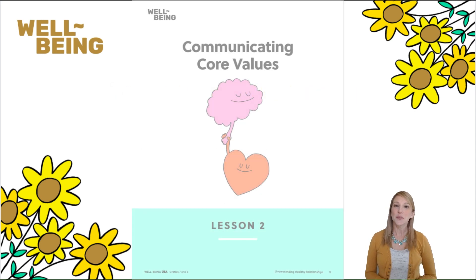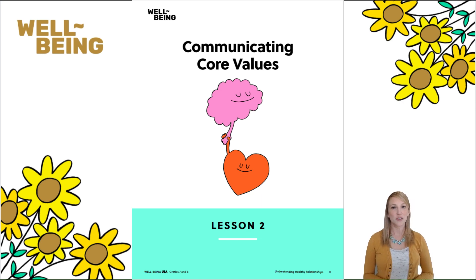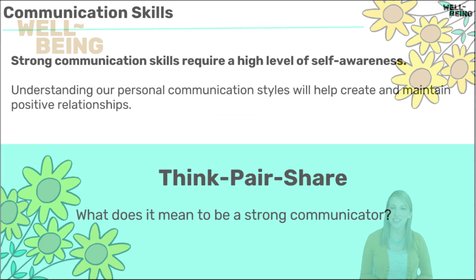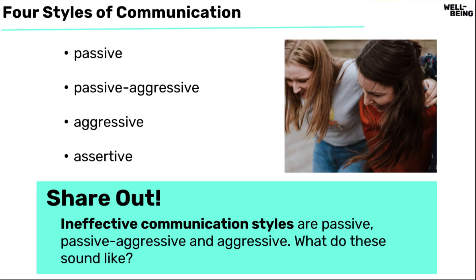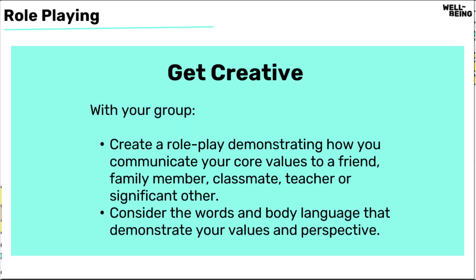Lesson 2 is Communicating Core Values, and it's meant for students to learn how to communicate with others, learn what their values are, and understand difficult relationships. You'll begin with defining different styles of communication, connecting that with Lesson 1 about relationships, and then having students identify their core values. Students will also engage in role-playing, so here you will want to make sure you set up clear expectations and monitor the content of their scripts.